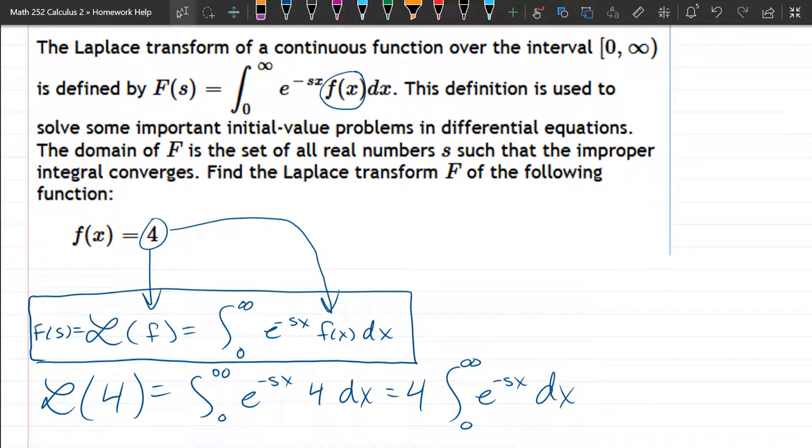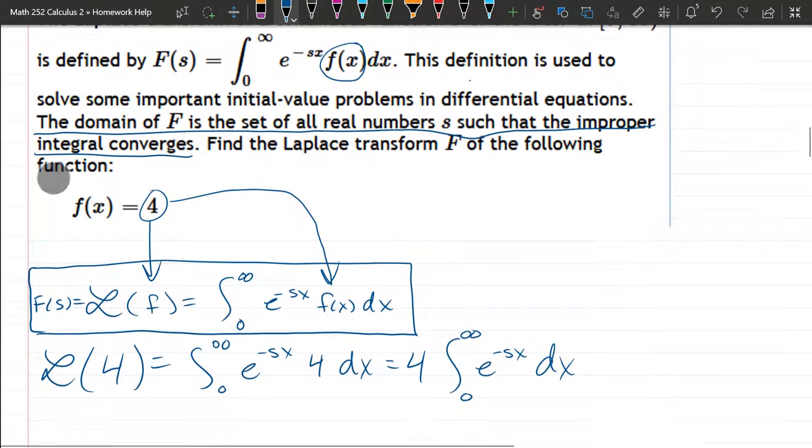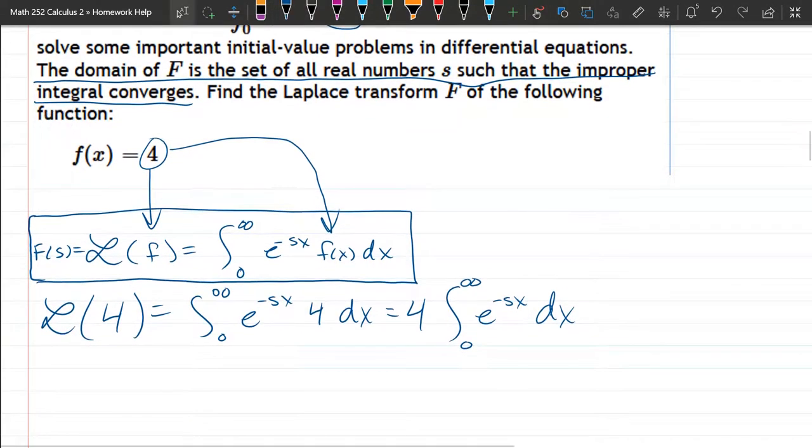Now there is some detail in here - the domain of F is the set of all real numbers s such that the improper integral converges. Okay, so this needs to converge. We'll worry about that once we take the limit after we do our antiderivative.